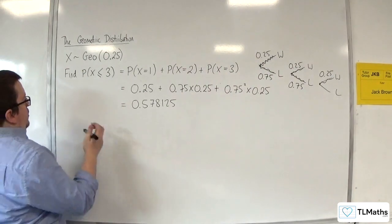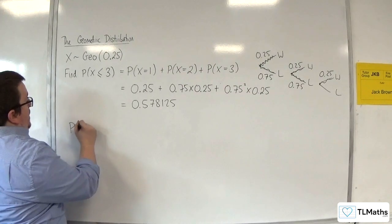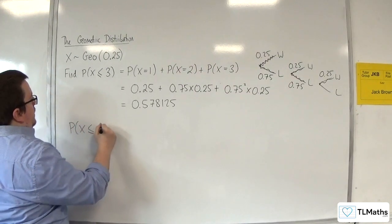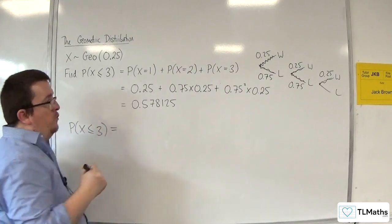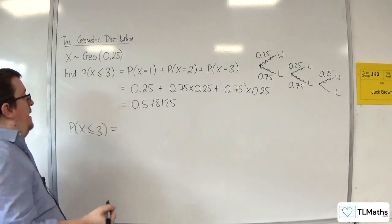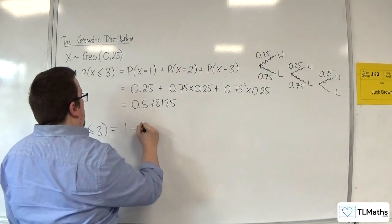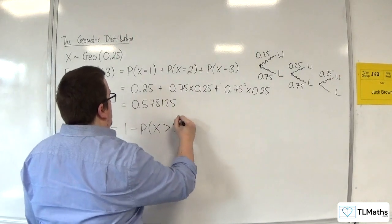Well, we know that from discrete probability distributions, that less than or equal to 3 must be 1, take away the probability of X being greater than 3.